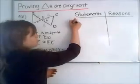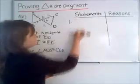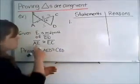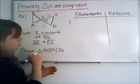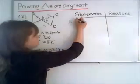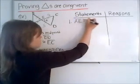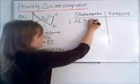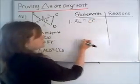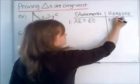So the first thing, I always like to start with the given. So it's given that AE is congruent to EC. And my reason for writing that down again is that it is given.